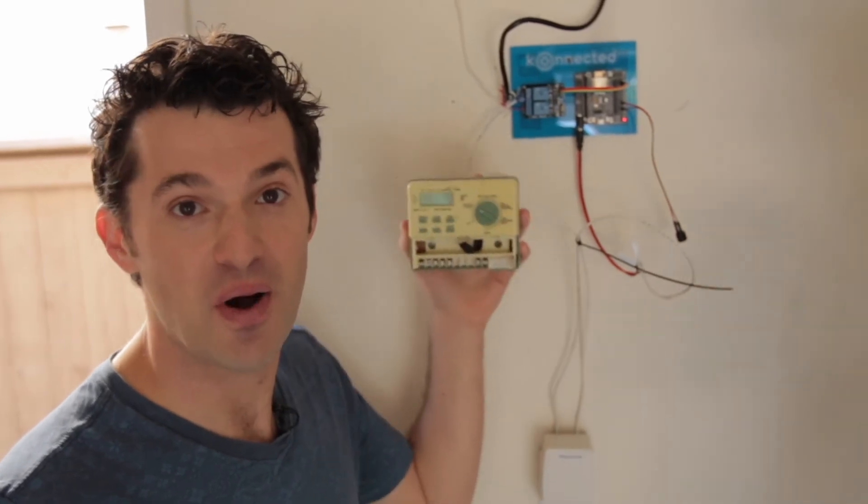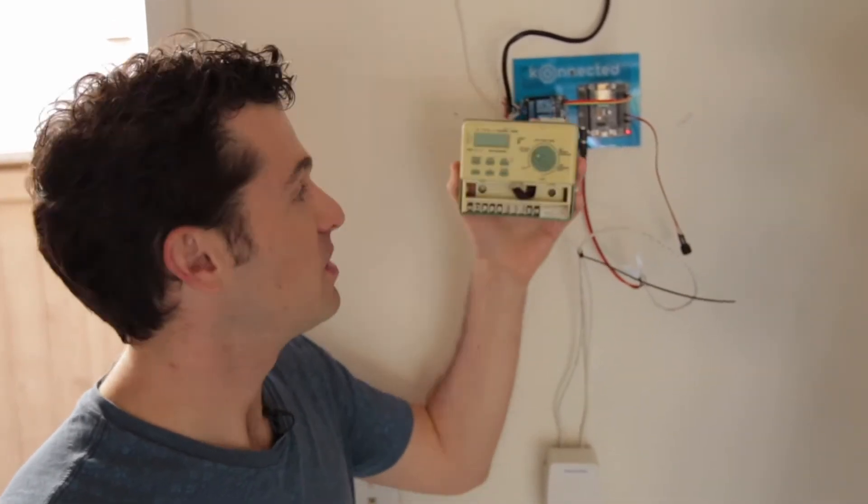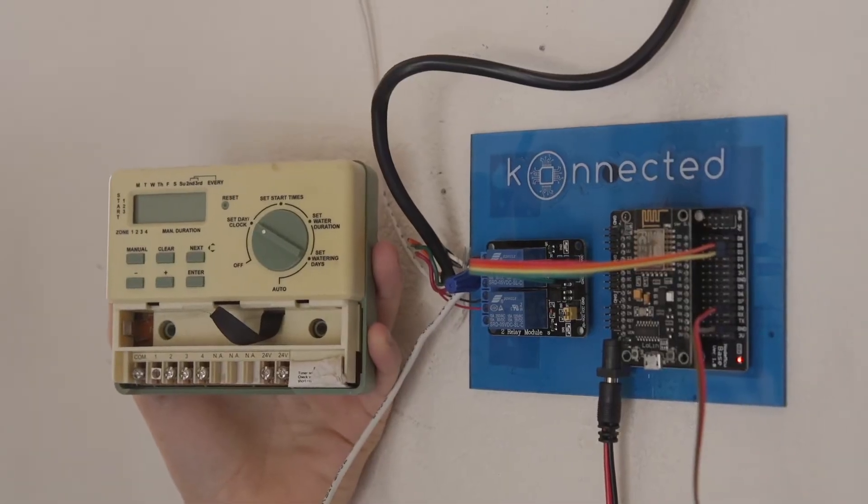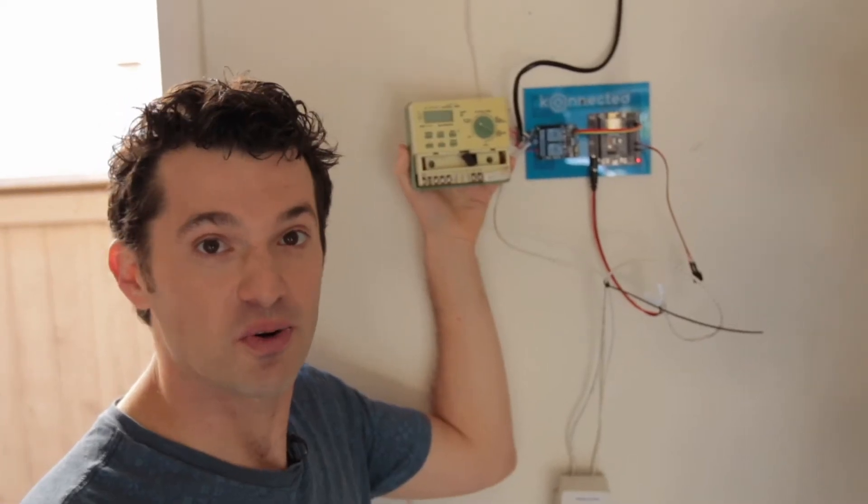And so for this example, I want to show you how I use Connected to replace my old sprinkler controller for my backyard sprinklers and also a garage door opener.